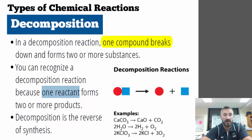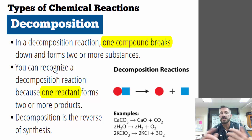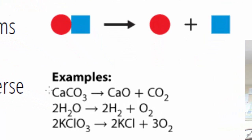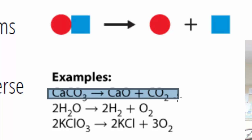The key is that you have one reactant. A decomposition is the reverse of synthesis. Three examples: calcium carbonate breaking down to form calcium oxide and carbon dioxide; water breaking down to form hydrogen gas and oxygen gas — the opposite of what we saw before; and potassium chlorate breaking down to form potassium chloride and oxygen.